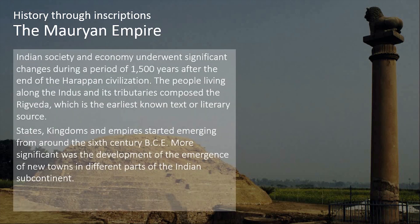Just a quick recap on what we covered previously: Indian society and economy underwent significant changes during a period of 1,500 years after the end of the Harappan civilization. The people living along the Indus and its tributaries composed the Rig Veda, which is the earliest known text or literary source. States, kingdoms and empires started emerging from around the 6th century BCE, and more significant was the development of new towns in different parts of the Indian subcontinent.